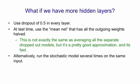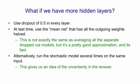We could run lots of stochastic models with dropout and then average across those stochastic models. And that would have one advantage over the mean net: it would give us an idea of the uncertainty in the answer.